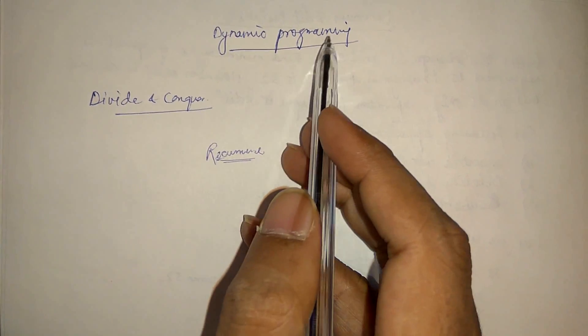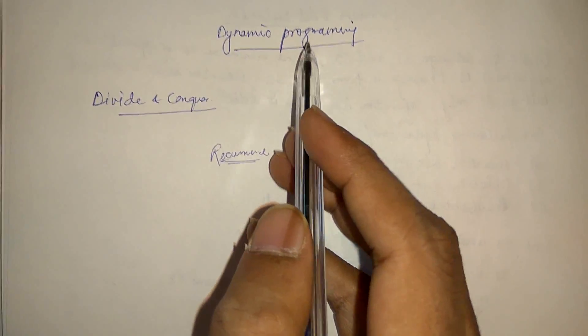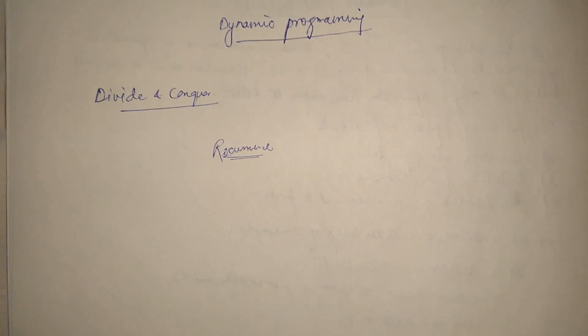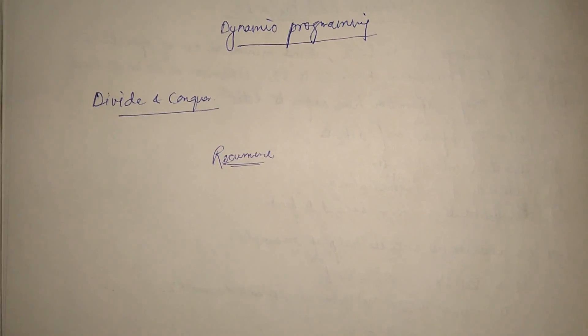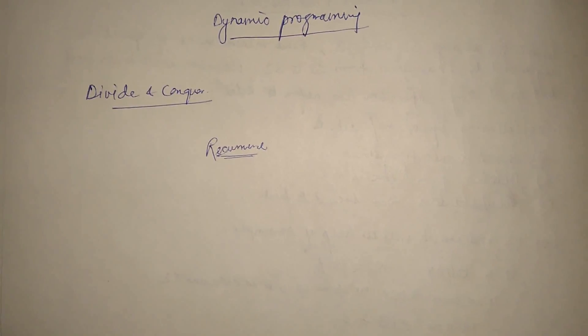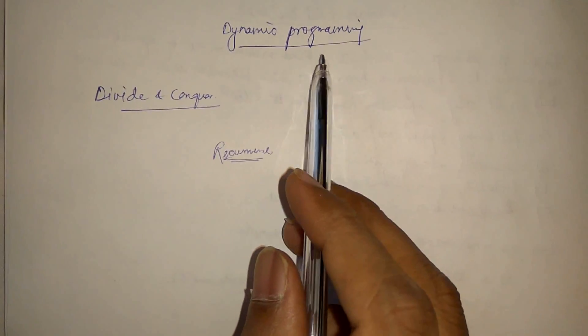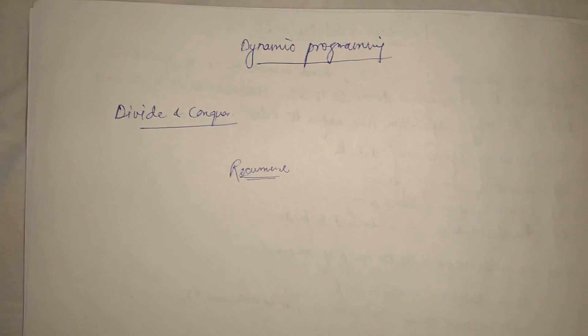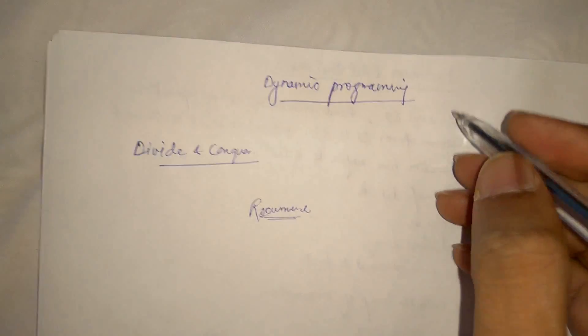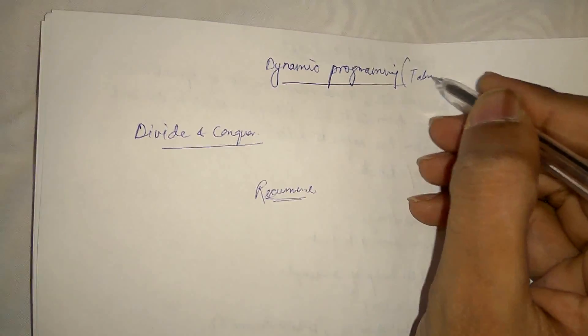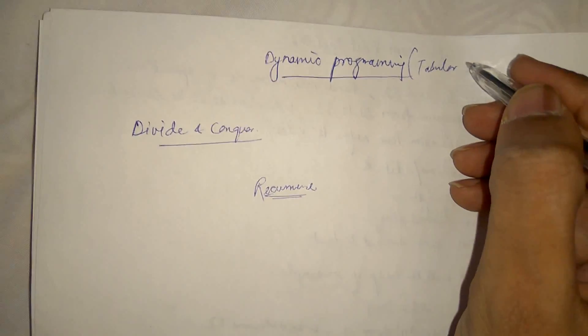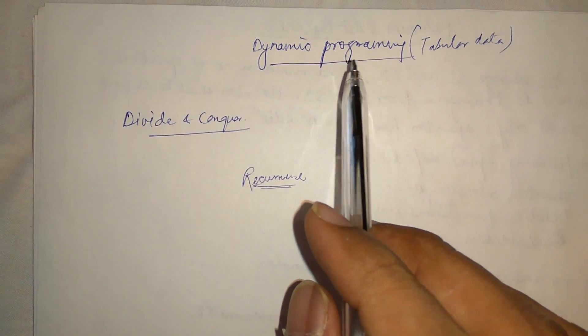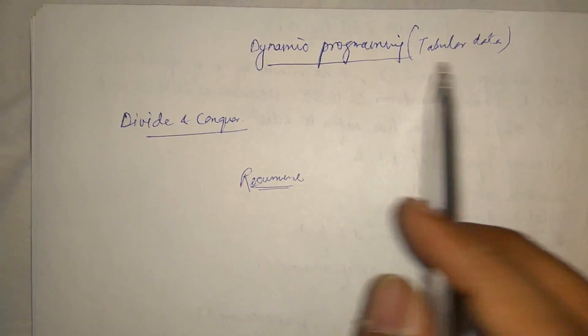First of all, do not get confused with this word programming. This dynamic programming was invented by Bellman in the 1950s. So basically at that time, programming used to be called as a table. Everything we compute and put in a table. So programming is basically tabular data.